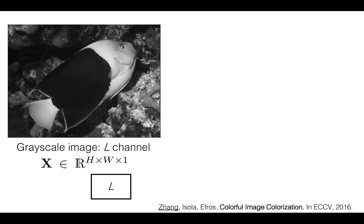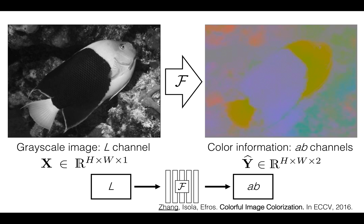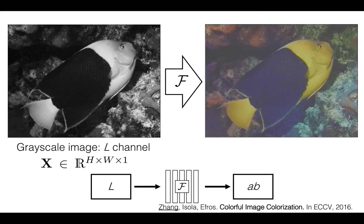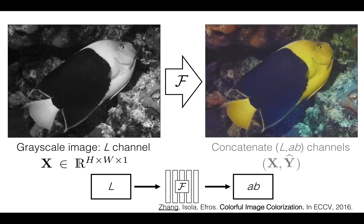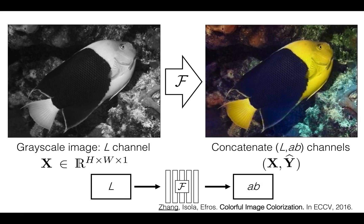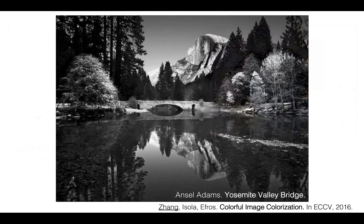We first consider the problem of image colorization. We train a deep network to predict the color channels from the grayscale channel. By concatenating the input and the output, we hope to achieve a vibrant and realistic colorization of the image. Here's our system on this iconic photograph of Yosemite Valley Bridge by Ansel Adams.